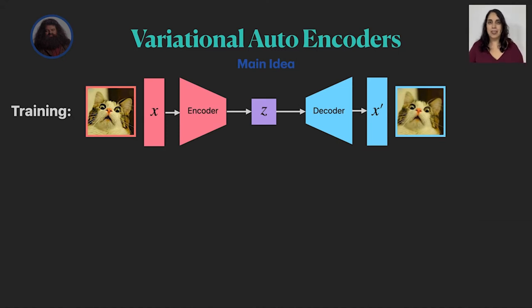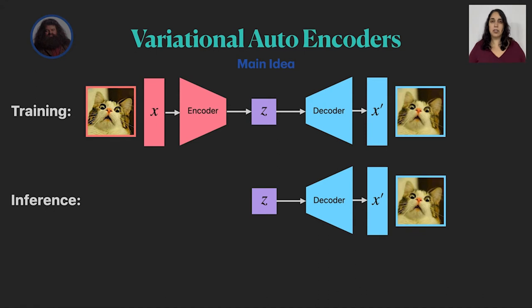So in training, we basically train our encoder and decoder together. And in inference, we only use the decoder, randomly sample z, and generate new images with the decoder.